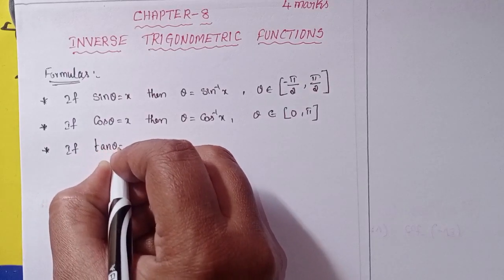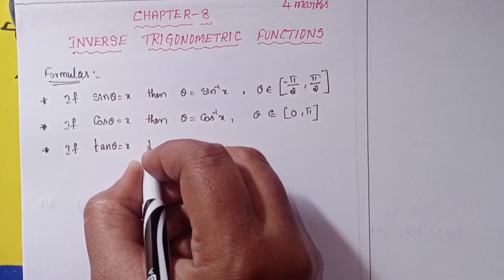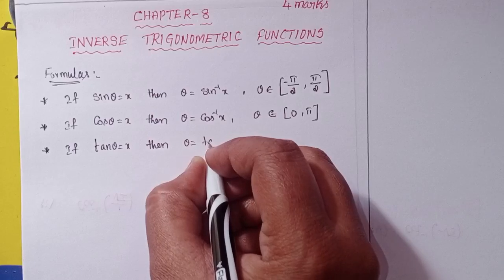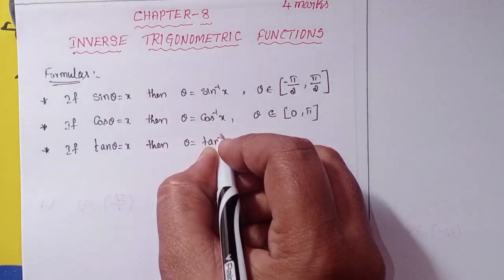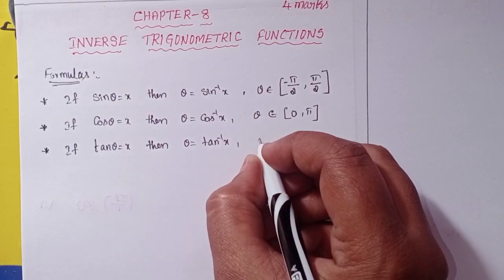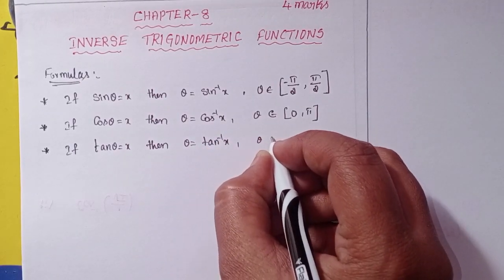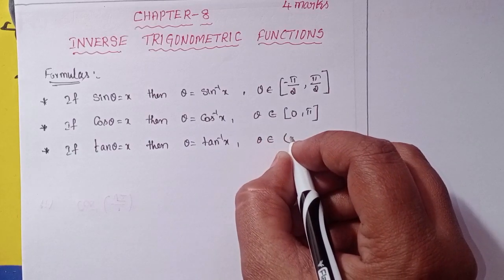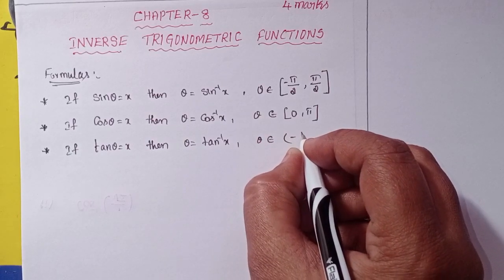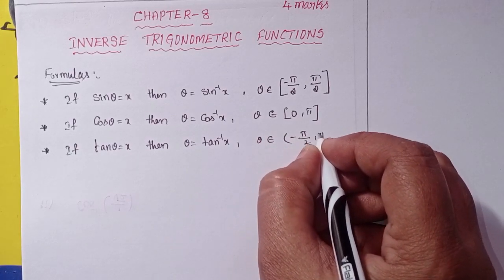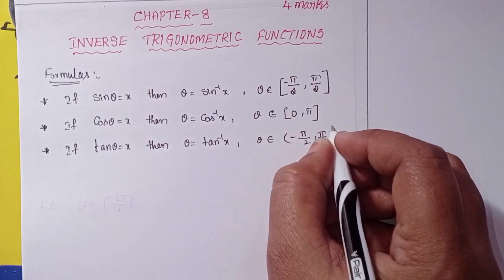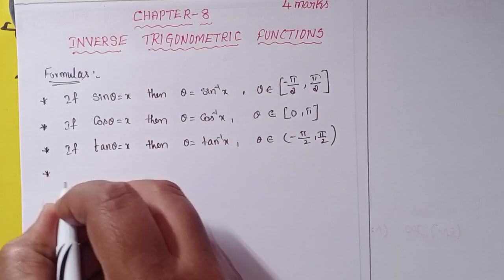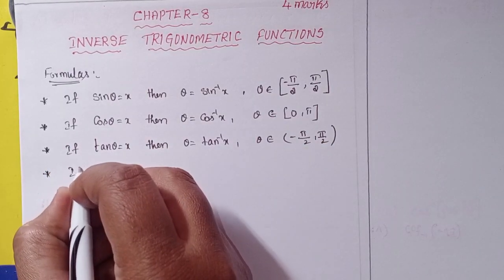If tan θ = x, then θ = tan⁻¹(x), where θ belongs to the open interval (−π/2, π/2).